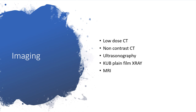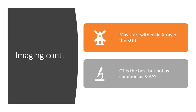Imaging techniques primarily include CT scan — either low-dose CT or non-contrast CT. Sonography is used particularly in pregnancy. Kidney, ureter, and bladder plain film X-ray is also an option, and MRI if available. You may start with plain X-ray, particularly in many parts of the world. CT is the best imaging modality, however, if it is affordable and readily available in your jurisdiction — but remember CT is not as common as X-ray.